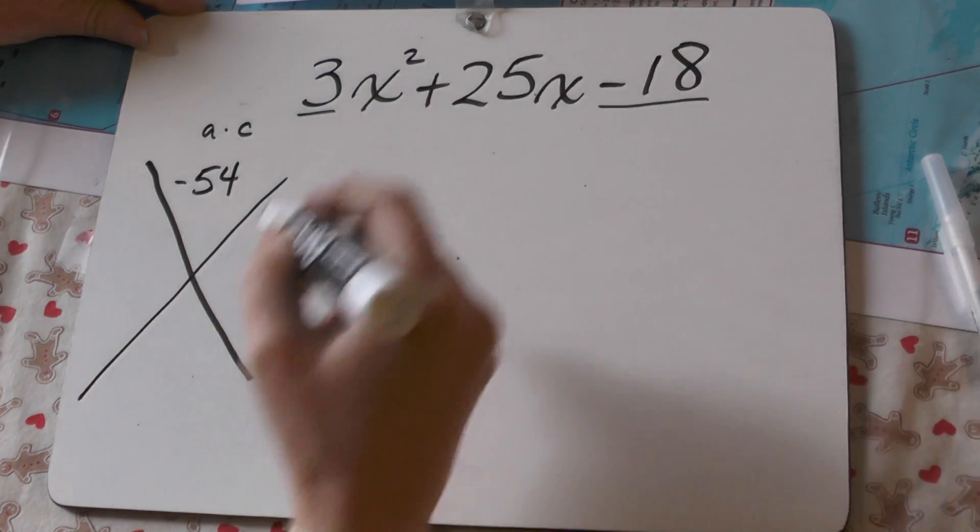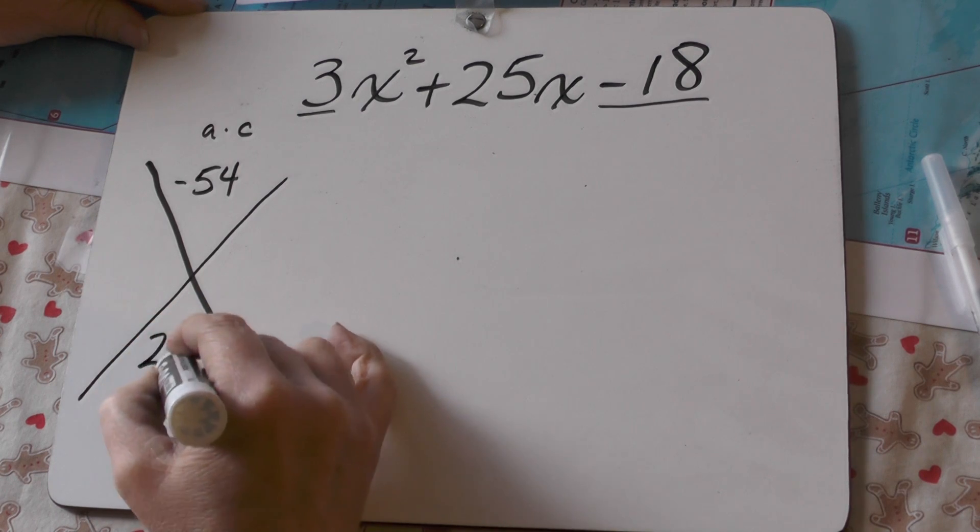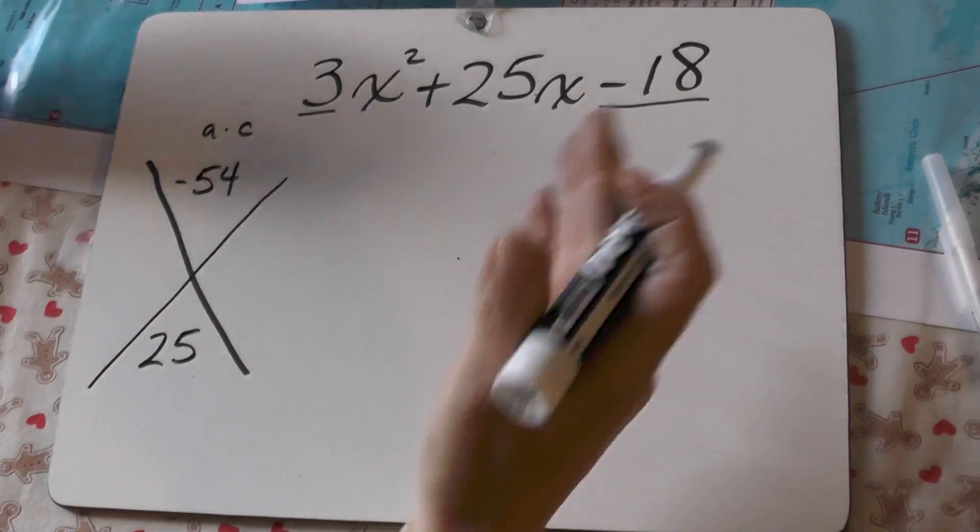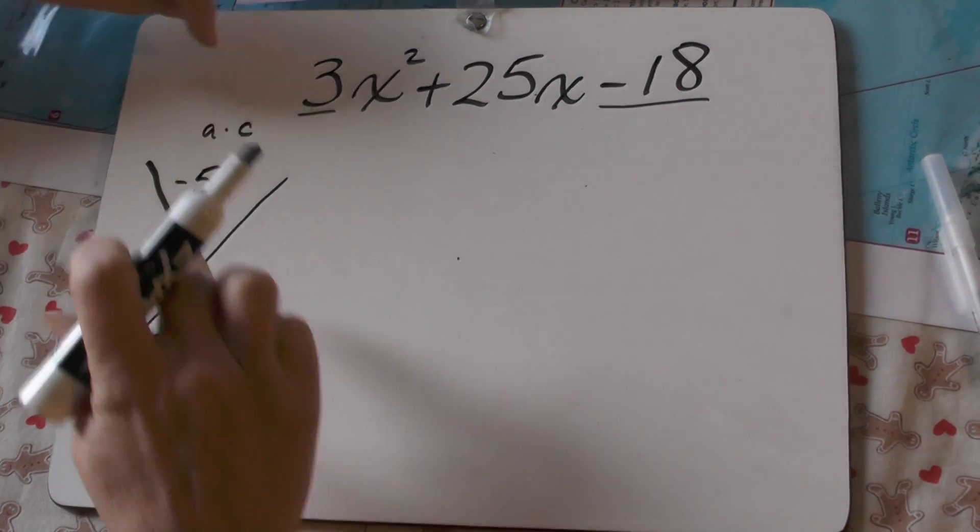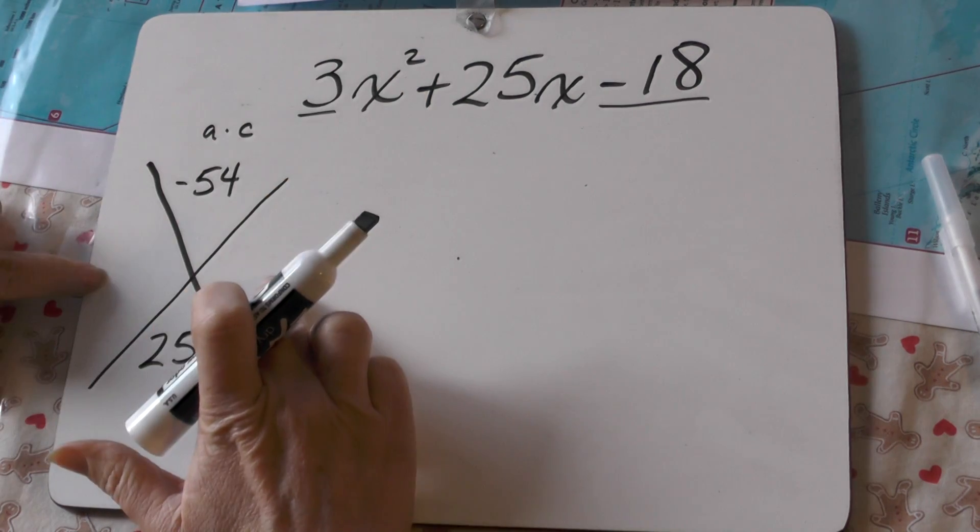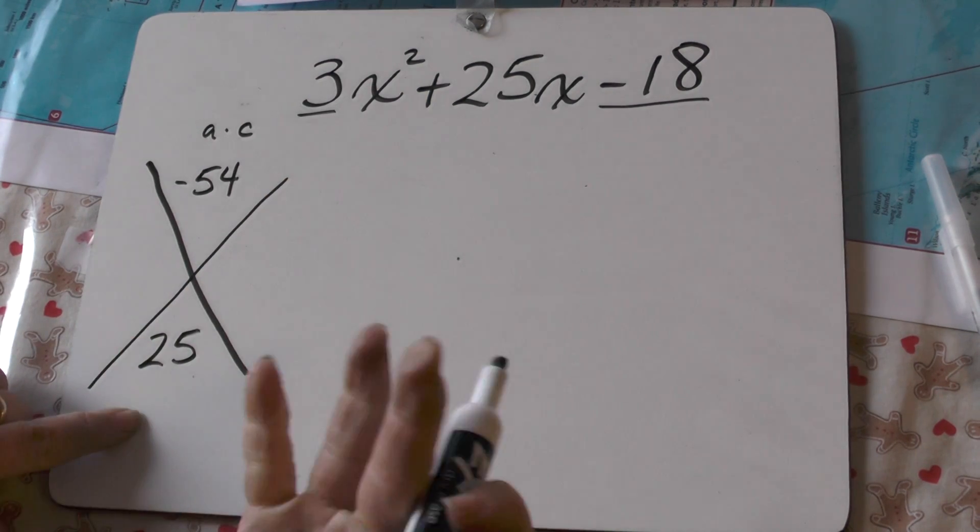Okay, now I'm going to take the middle term, and I'm going to put that down at the bottom. Because really, when you think about what you've been doing, this is going to make sense. I'm looking for two factors of this number that add up to this number, because that's how FOILing works.